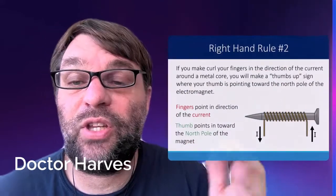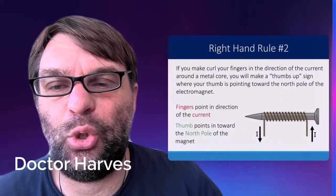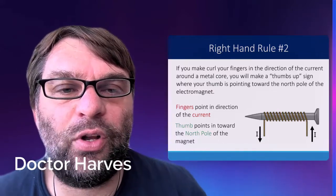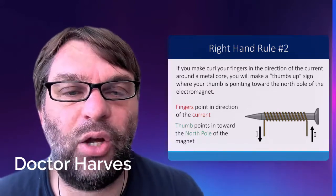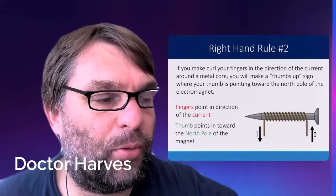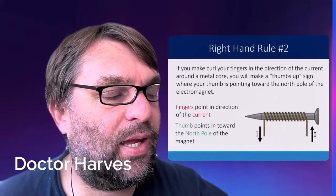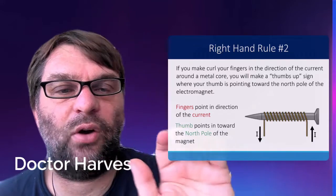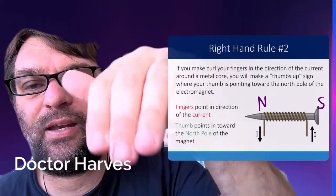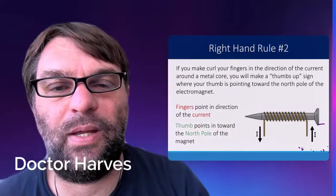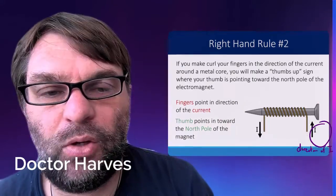This is the example of the right-hand rule number two. If you curled your fingers in the direction of the current, this time of the wire, then what you're going to see is that the thumb will make the direction of the north pole. It's going to face the north pole. So, the current's going that way, with your right-hand rule, that means the north pole is going to be that direction.